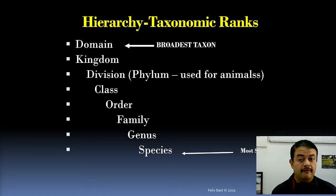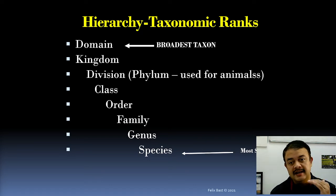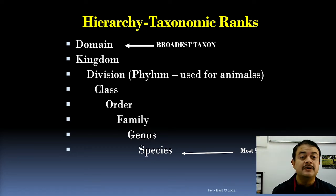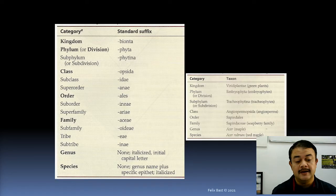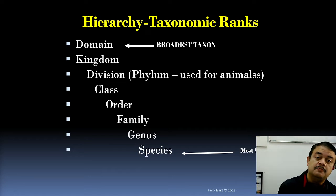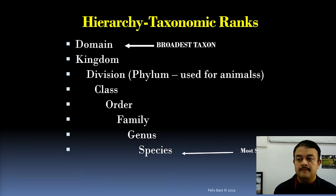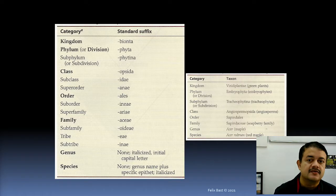In botany, we use the term 'division,' while for animals it is 'phylum' — that is the only difference. Inside division, we have class, order, family, genus, and finally species. The genus and species are the two names used to identify specific organisms in binomial nomenclature, while division is used for plants.